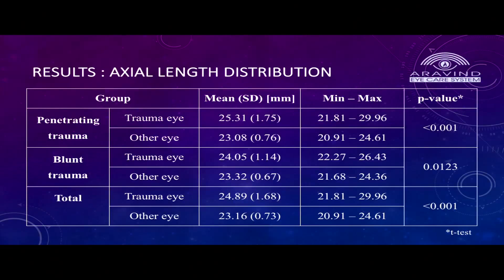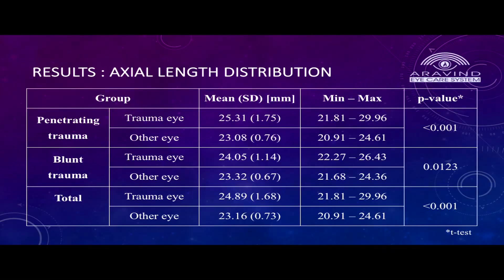These were the results of the mean axial length. In penetrating trauma, the mean axial length was around 25.31 mm, while in blunt it was around 24.05 mm. So as we can see, it was more in penetrating as compared to blunt, and this was seen in both males and females.